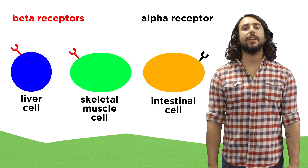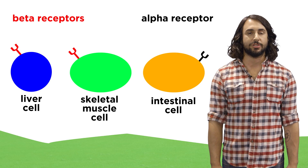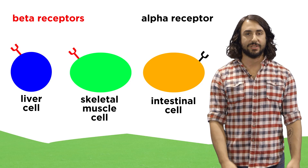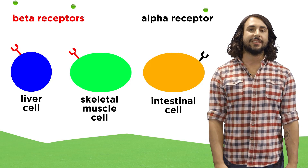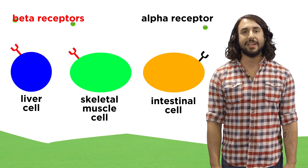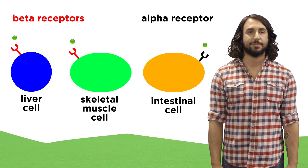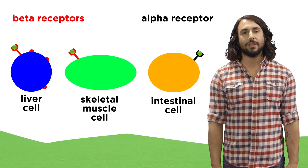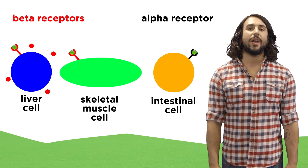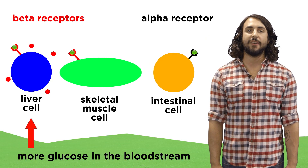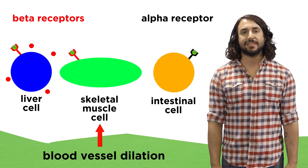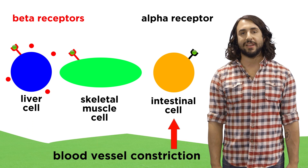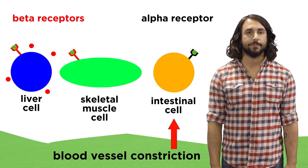Here we can see two different receptors, called alpha and beta receptors, existing on three different cell types, as well as each unique result — whether increase of blood glucose, blood vessel dilation, or blood vessel constriction.